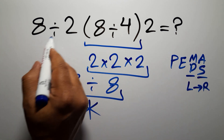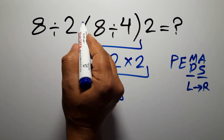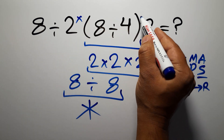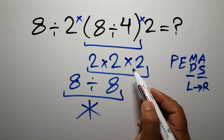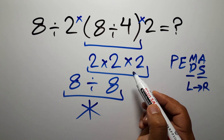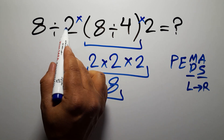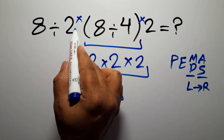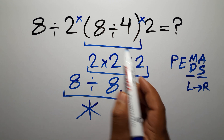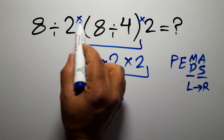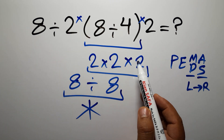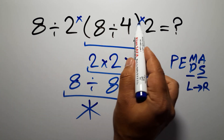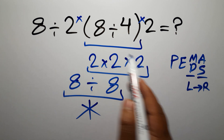Here, in this expression, we have one division, two multiplications, and one parentheses. We need to pay attention that in mathematics, when a number is placed next to parentheses, it means multiplication, and we usually don't write the multiplication sign for brevity.